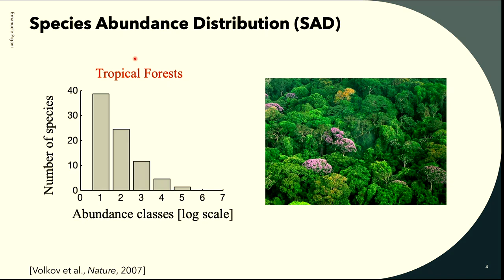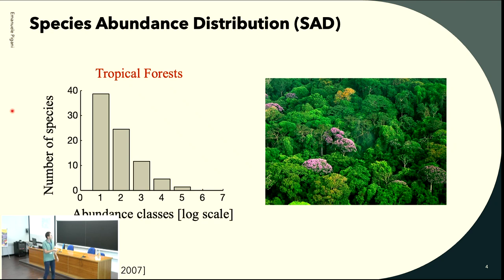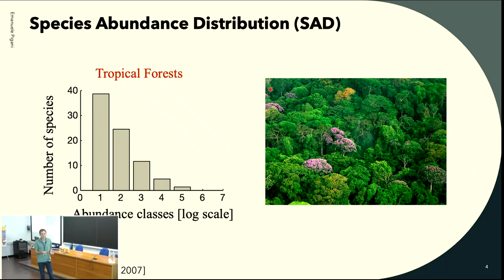Before getting into the topics, the most important descriptor during this talk will be the species-abundance distribution, which is very used in ecology. Basically, here I show a tropical forest just for historical reasons. Let's suppose you have a sample from your forest — a possible way to study it as a community is to classify the species you observe in classes of abundances, usually in log-two scales. So you divide in log-two scale abundances from one to two, from two to four, from four to eight, and so on, and count how many species have a particular abundance.